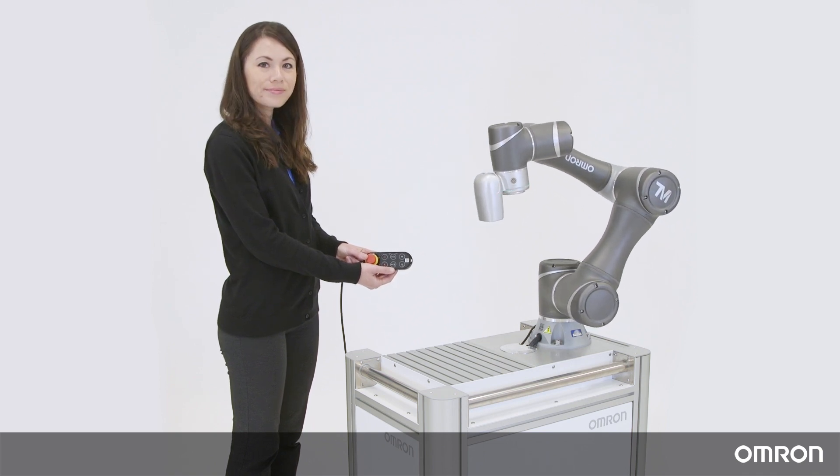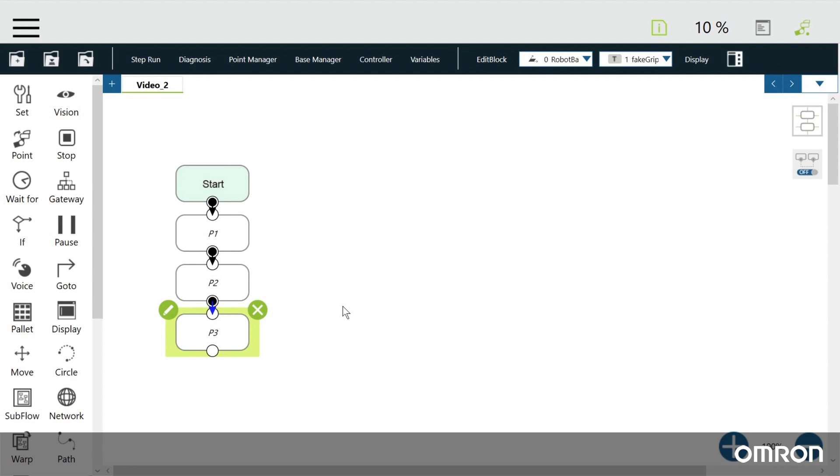That was easy, wasn't it? On the Project screen, you will see the project that you have just created. This is called a flowchart. We will explain more about this in our next video.